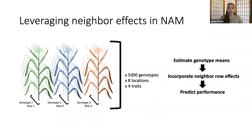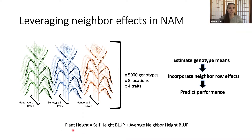Using this data, I am able to estimate the genotype means via BLUPs or GEBVs, incorporate the neighbor row effects, and ultimately predict performance. A simplified model could look something like this, where I'm predicting plant height of row two by using BLUPs for the self row and then taking the average BLUPs of rows one and three to see how those neighbors affect the prediction for the plant height of the central row.